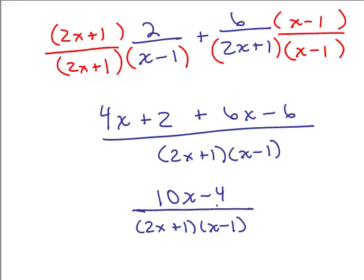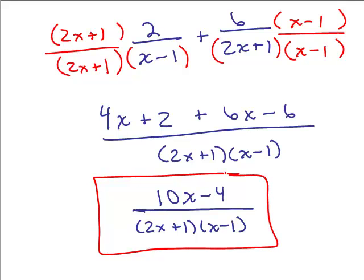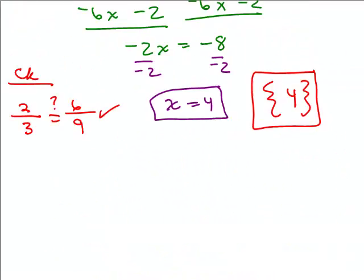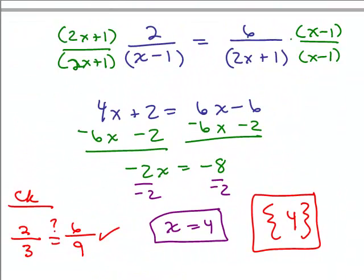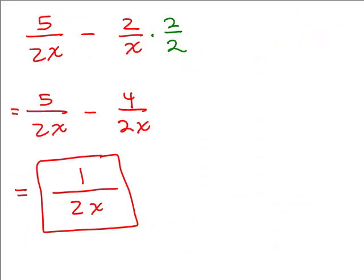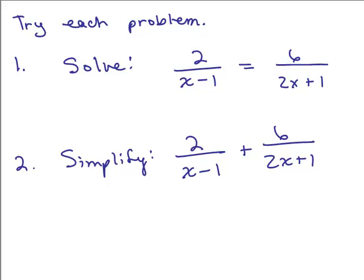So, I have 10x minus 4 over (2x plus 1) times (x minus 1). Now, you can factor the numerator, you can factor a 2 out and you'd have 5x minus 2, but it won't cancel with anything, so it's fine to just leave this answer like this. You're simplifying, you're adding fractions. Your final answer still is going to be a fraction with the least common denominator, nothing canceled, where in the previous problem I was able to eliminate the fractions because it was an equation just to make the problem easier to solve, and in the end, I'm looking for a value for x. So be careful, there's a big difference between simplifying and solving.